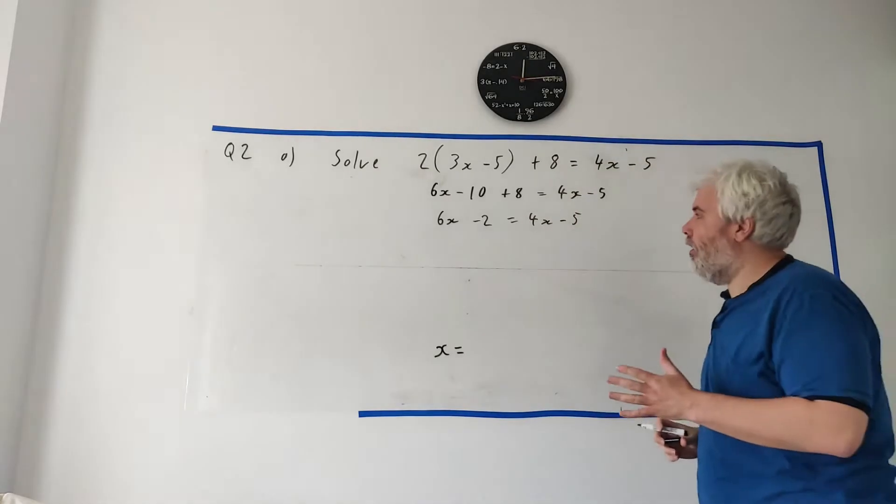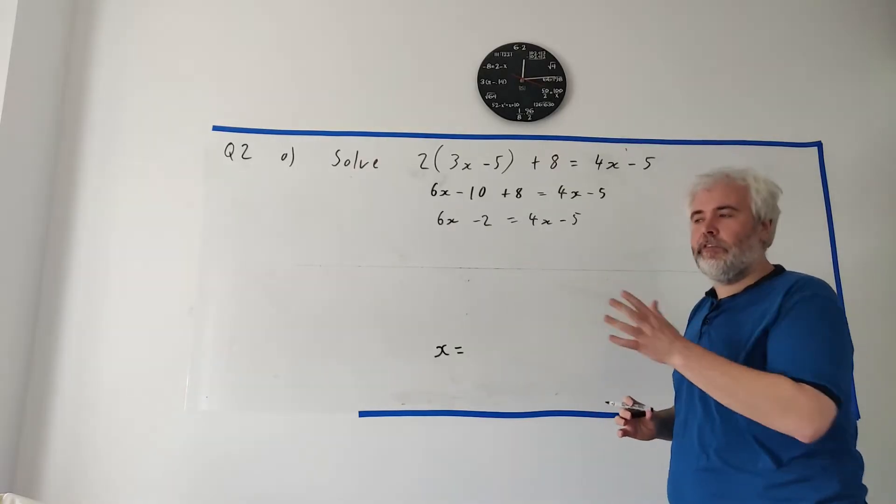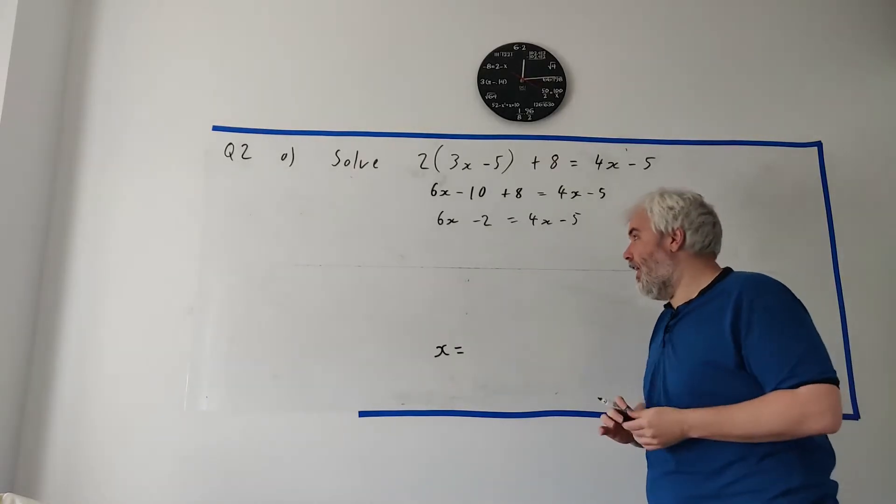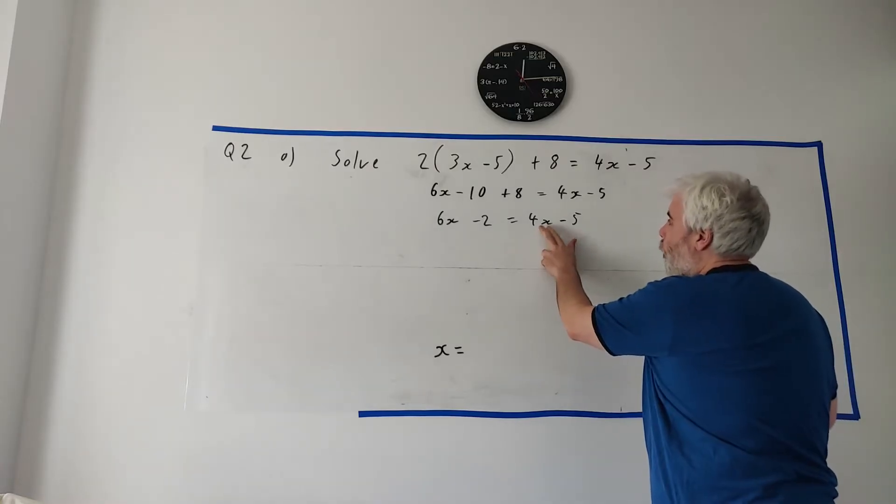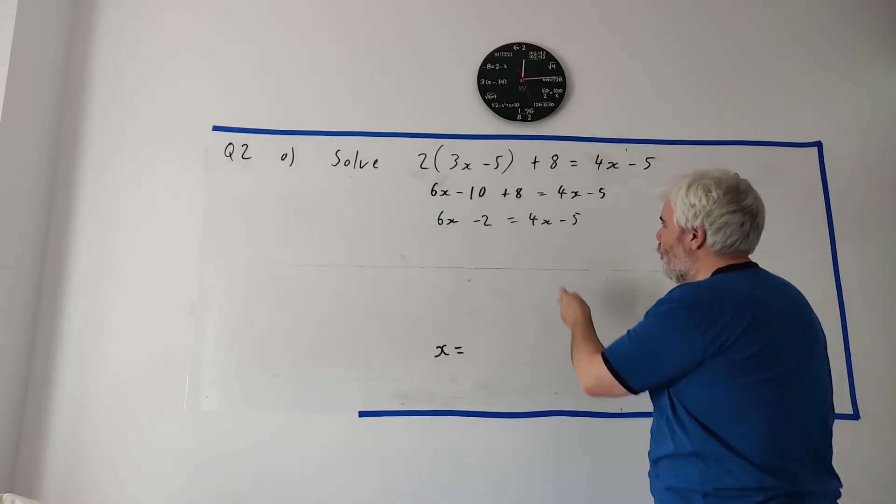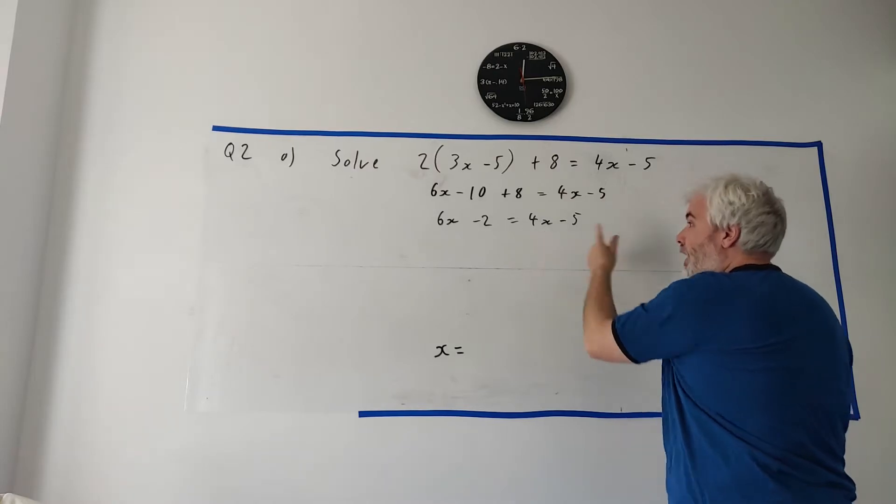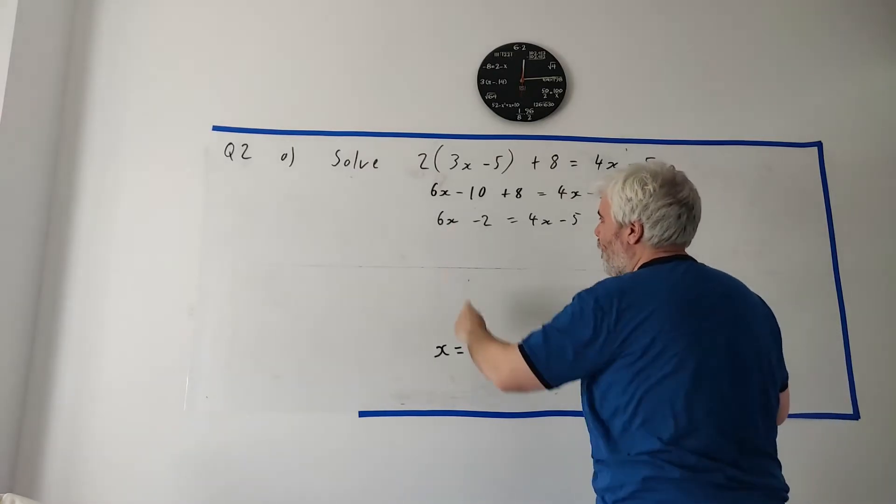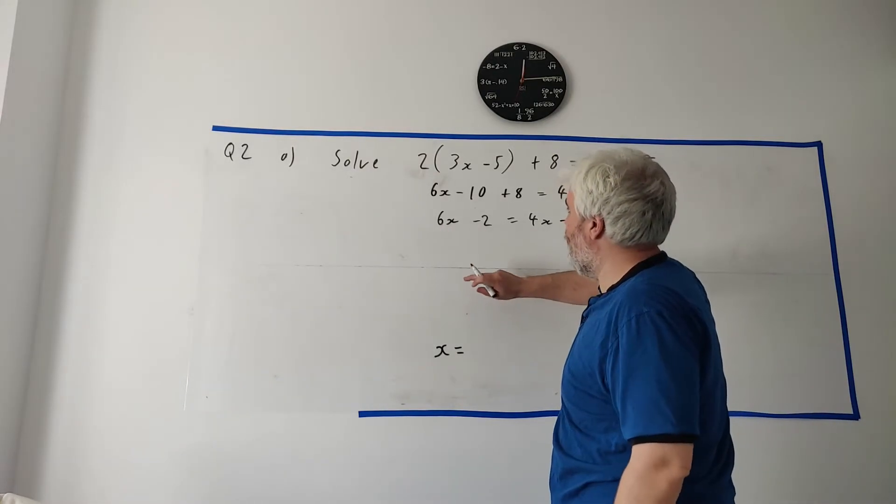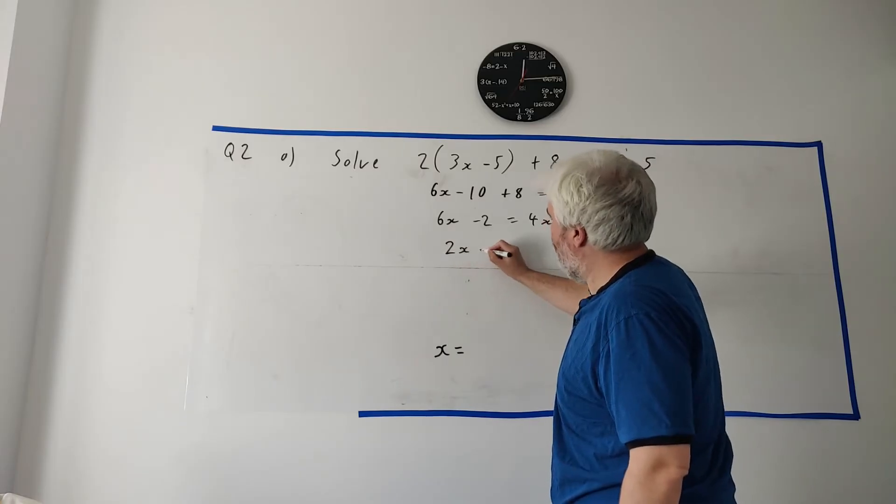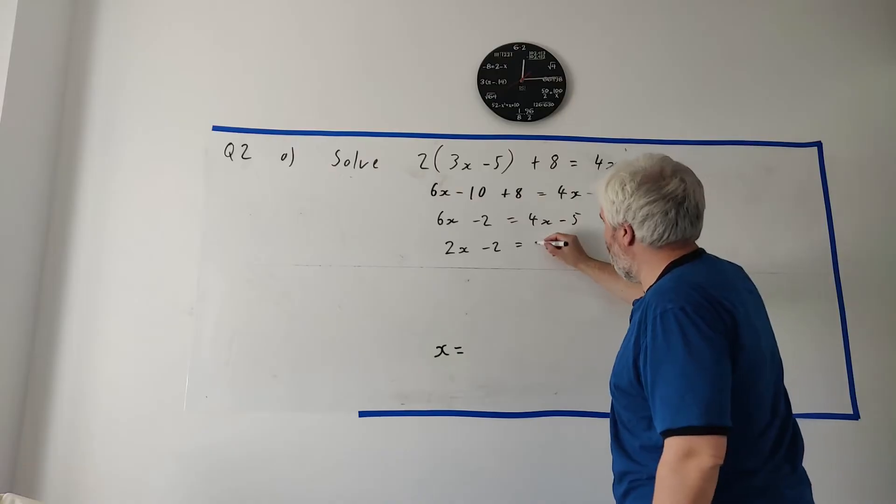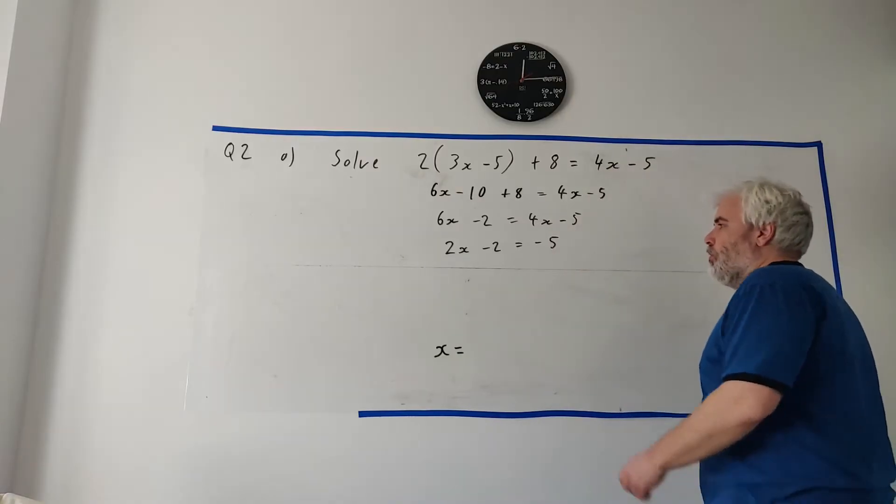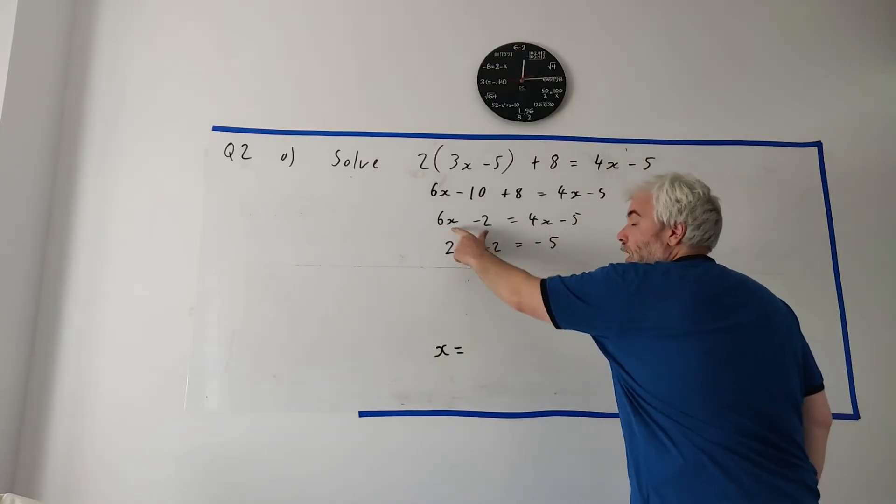Next thing I want to start thinking of is moving stuff over the equals. But I don't like saying that, so you'll always hear me say take 4x away from both sides. So if we take 4x away from this side, and then to be fair, we take it away from this side. 6x minus 4x is 2x. Leave minus 2 where it is. 4x minus 4x is nothing.